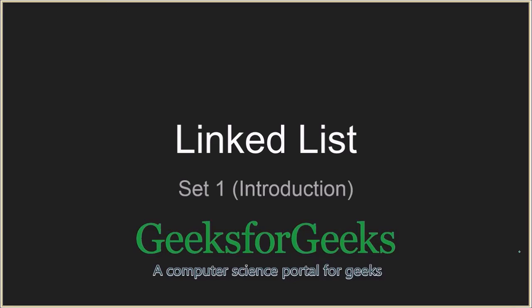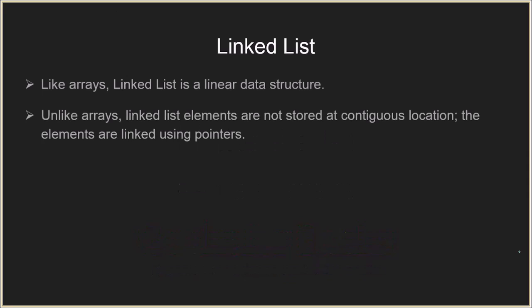Hello everyone and welcome to GeeksforGeeks. Today we are going to discuss a very important data structure: linked list. Linked list is another data structure like array, and it is also a linear data structure. By linear data structure we mean that it also stores data in a 1D fashion, but unlike arrays, linked list elements are not stored in contiguous locations. Each element can be stored at far away places in memory, and they are linked using pointers.